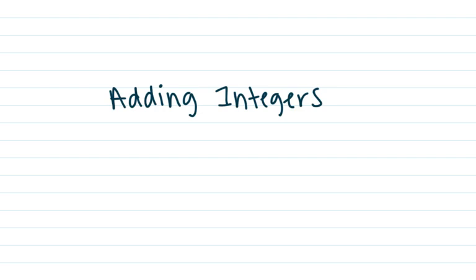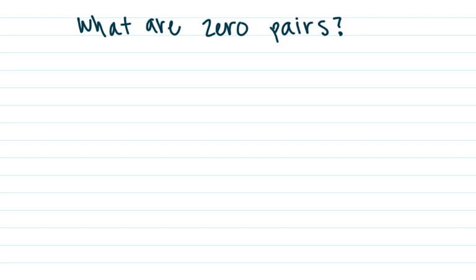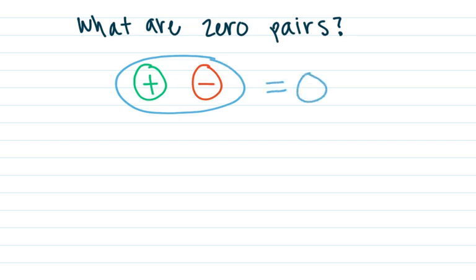First of all, before we can even get started, we have to talk about zero pairs. A zero pair is a pair of numbers that when they are added together, they equal zero. For example, if I had a positive and added it with a negative — one positive and one negative — they would cancel each other out. They are a zero pair. If I had a dollar and then gave away a dollar, how much money do I have? Well, I have zero dollars. Having a dollar is a positive one; giving away a dollar is a negative one. So a negative and a positive together cancel each other out and equal zero.